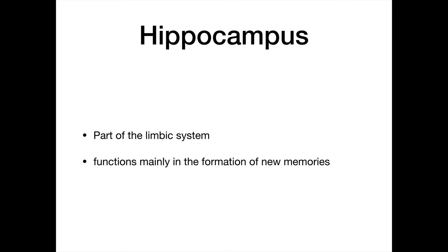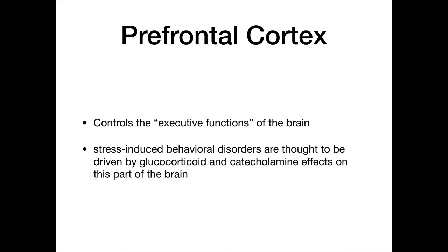The hippocampus is also responsible for capturing the emotional interpretation that corresponds to events. Importantly, both acute and chronic stress inhibit the formation of new memories as well as the ability to retrieve memories — this is well established. Chronic stress really disrupts our ability to form memories and interpret the emotional component of events. The prefrontal cortex controls executive functions — decision making, planning, social interaction, short-term memory, and problem solving — and stress-induced behavioral disorders are thought to be driven largely by glucocorticoid and catecholamine effects on this brain region.